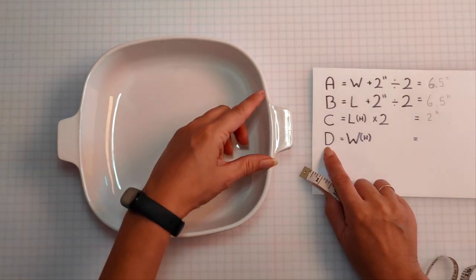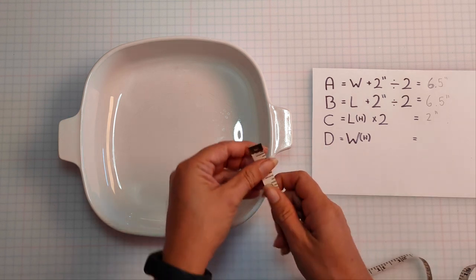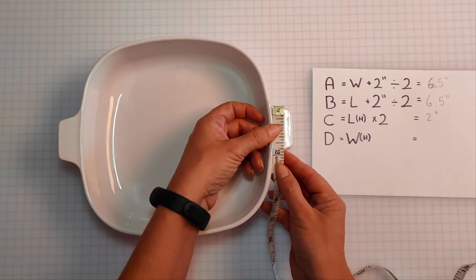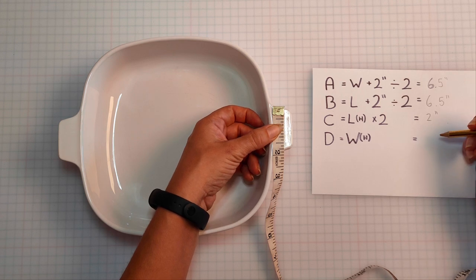Measurement D is the width of the handle. Now because this pattern is going to be on a fold all we want is the width of the handle itself. Mine is two inches therefore my D measurement is still two inches.